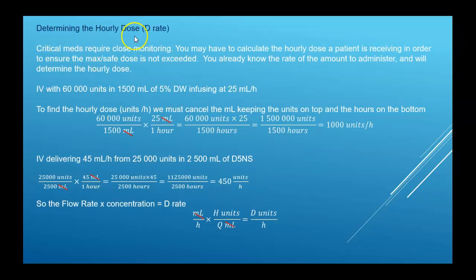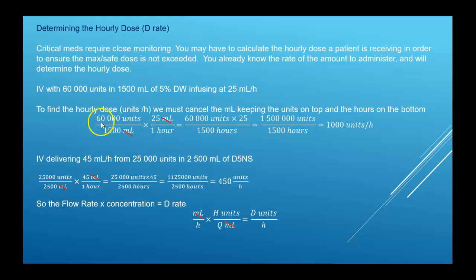Now we look at determining the hourly dose — the opposite of what we just did. Previously we were given the D rate and concentration to find the flow rate. Here we're given the flow rate and concentration to find the D rate. You take your flow rate in milliliters per hour and multiply by the concentration as units over milliliters, so the milliliters cancel and you end up with units per hour — the D rate.